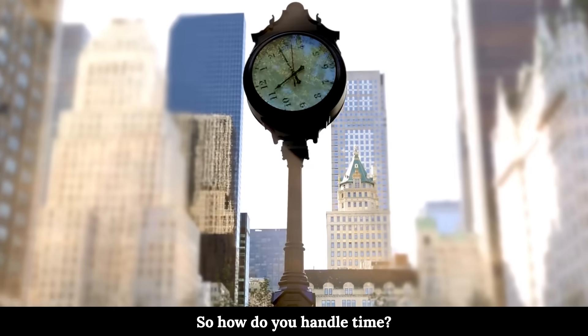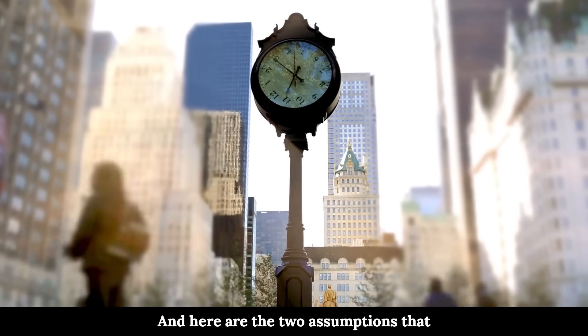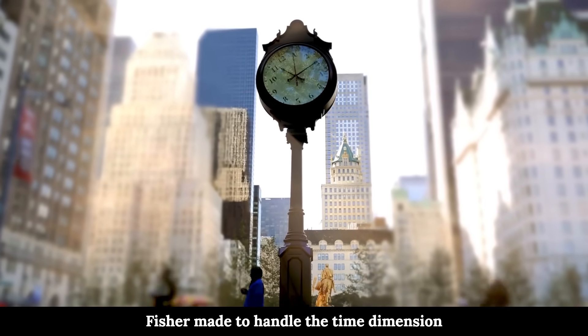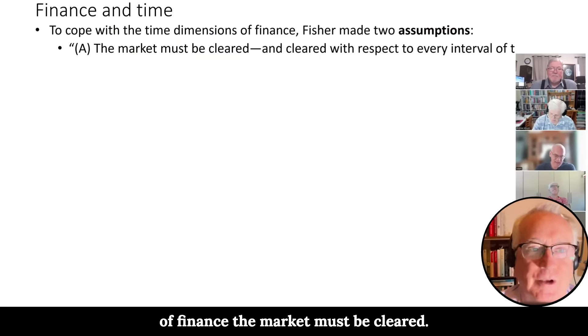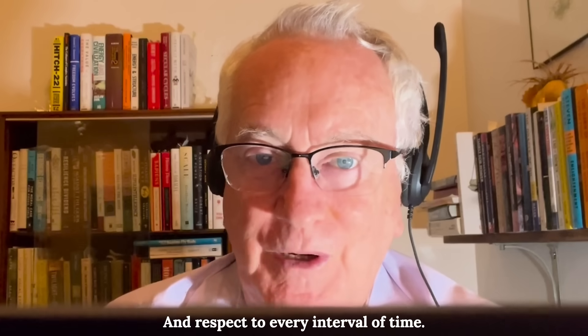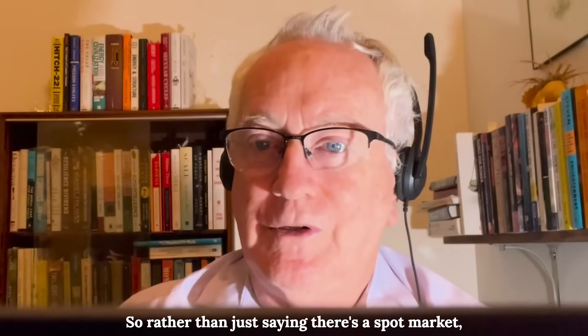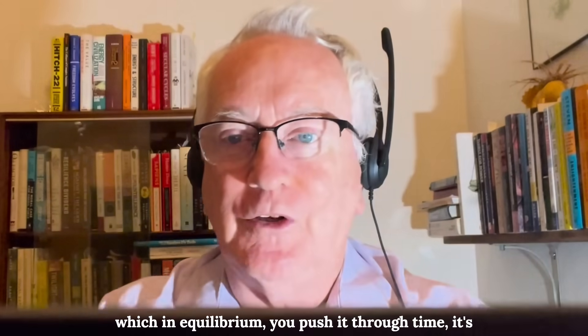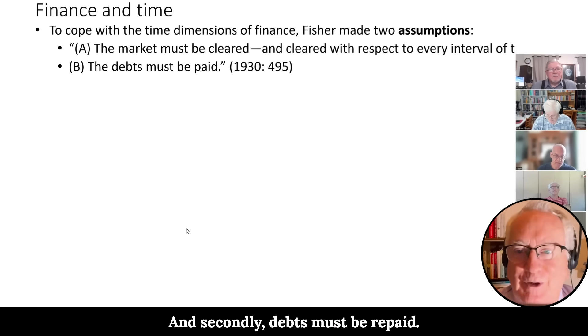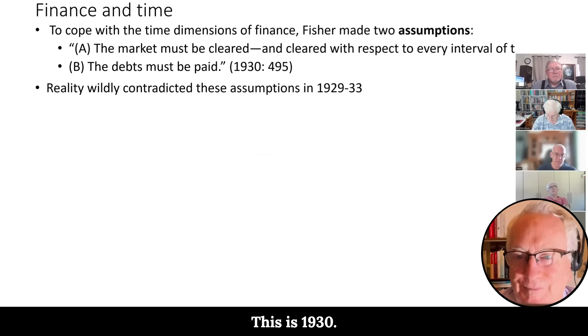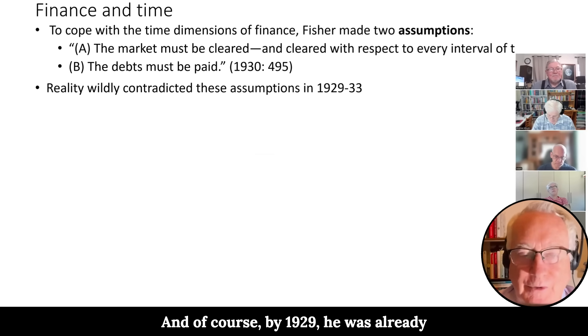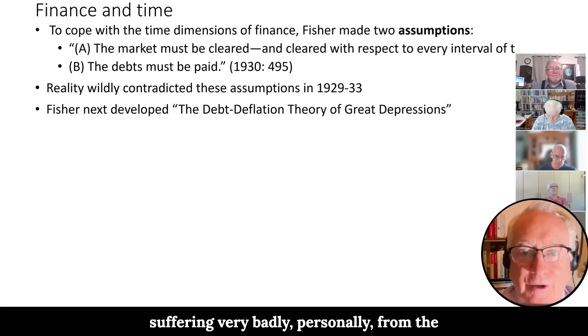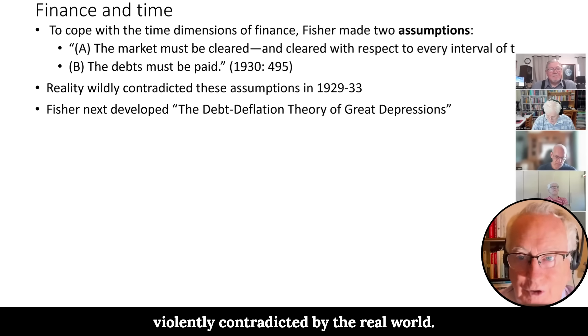So how do you handle time? Well, it's simple. You make assumptions. And here are the two assumptions that Fisher made to handle the time dimension of finance. The market must be cleared with respect to every interval of time. So rather than just saying there's a spot market which is in equilibrium, you push it through time. It's got to be an equilibrium through the whole of time. And secondly, debts must be repaid. This is 1930. And of course by 1929 he was already suffering very badly personally from the fact that these two assumptions were violently contradicted by the real world.